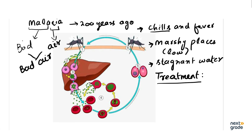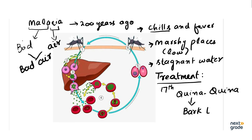کتاب میں mentioned ہے کہ 17th century میں America discover ہوا اور وہاں سے migration start ہوئی۔ America سے medicinal plants یورپ بھیجی گئیں — ان میں ایک drug تھی جس کا نام تھا Quina Quina۔ یہ آپ کو short question میں بھی آ سکتا ہے۔ Quina Quina basically ایک tree کی bark ہے اور یہ is used to treat fever — not malaria۔ پھر انہوں نے یہ fever والی medicine malaria کے patients کو بھی دینا شروع کی۔ Quina Quina کی discovery کے کچھ عرصے بعد جب fever کے patients کو دی گئی تو وہ بہتر feel کرنے لگے۔